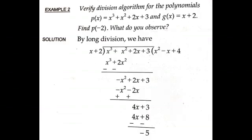To make this concept more clear, here is another example. Verify the division algorithm for the polynomial P(x) = x³ + x² + 2x + 3 and G(x) = x + 2. Also find P(-2) and write your observation. We will proceed the same way as in Example 1, carrying out the long division first — so x + 2 divides x³ + x² + 2x + 3.